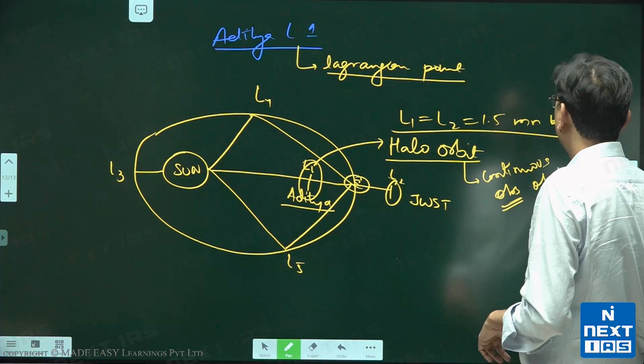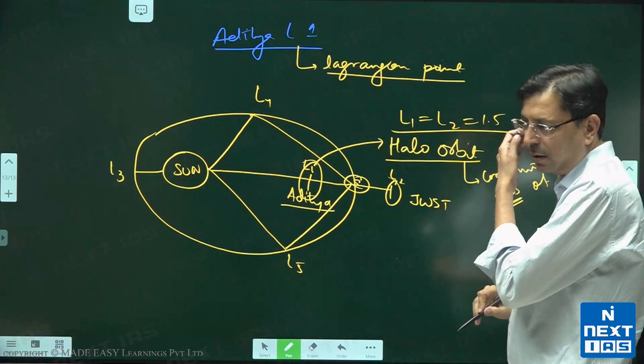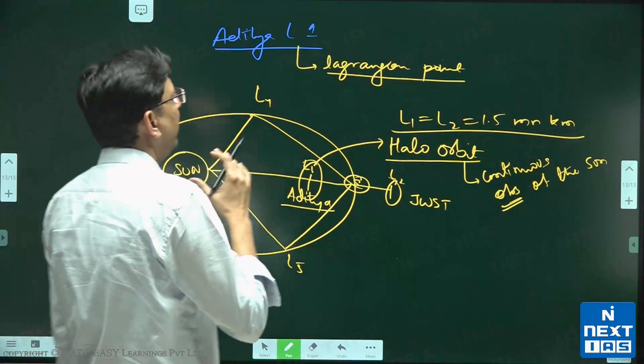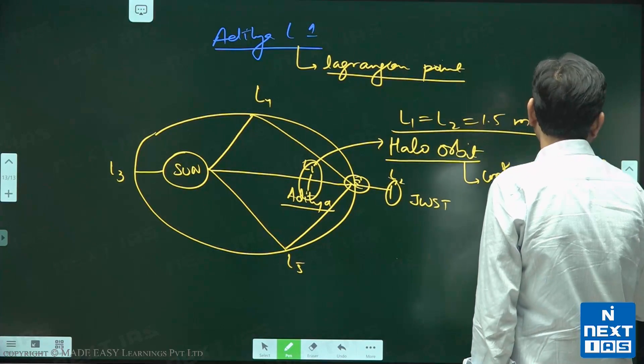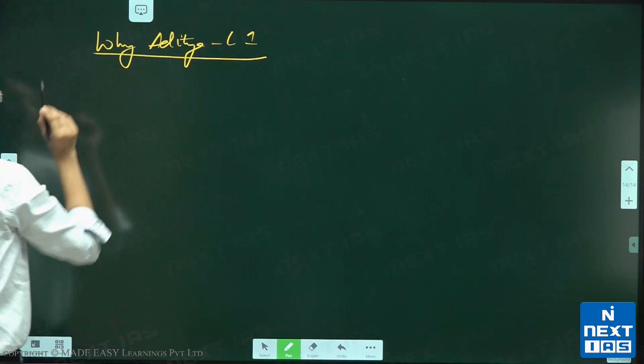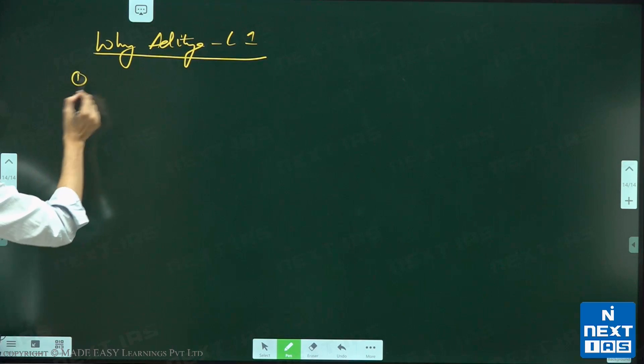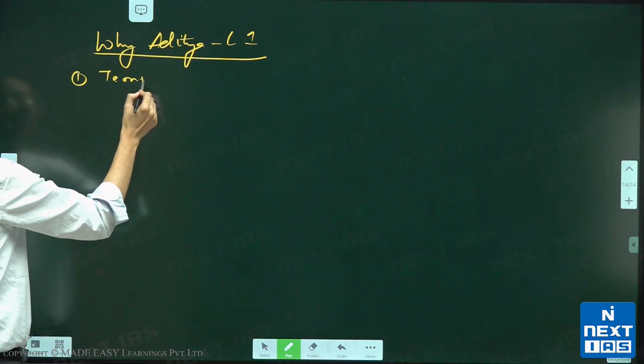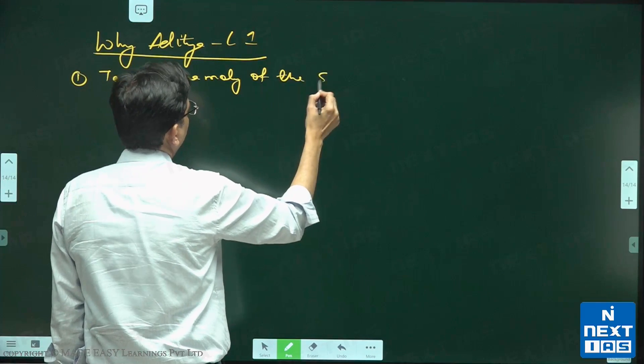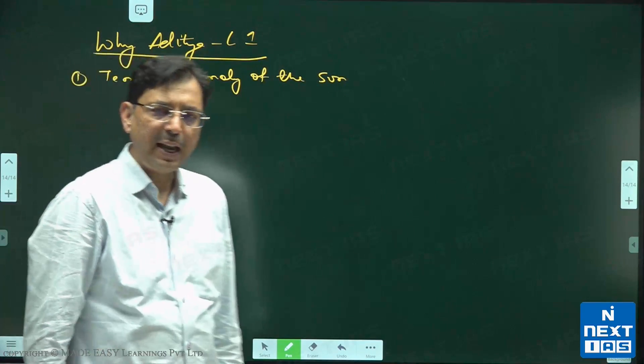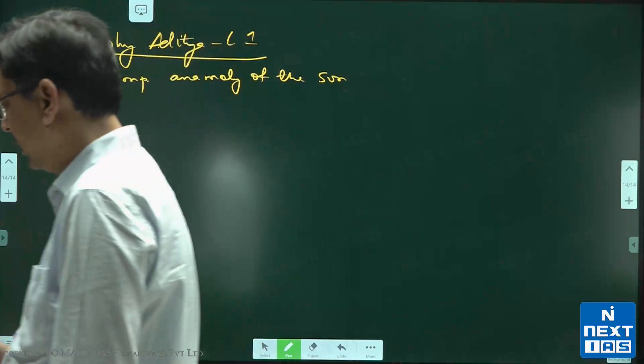So here, this is the main description. Aditya - basically, why Aditya L1? First, Aditya L1 is to study the temperature anomaly of the Sun. Now, the Sun - what happens as we move out, as we move from core till photosphere? Temperature decreases.